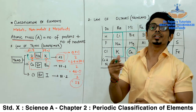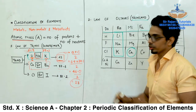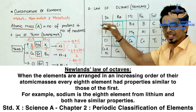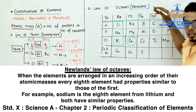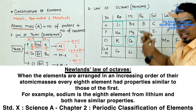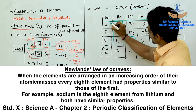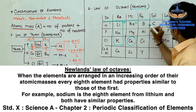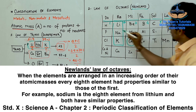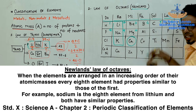Mendeleev's periodic law states: the properties of the elements are a periodic function of their atomic masses. This is a very important law generally asked as an objective or one-liner. Again repeating: it is atomic mass and not atomic number. Later on, you will come to a point where the same definition gets changed by only one word — atomic mass will get converted into atomic number. Students generally make a mistake over there, so remember: for Mendeleev's periodic law, it is atomic mass and not atomic number.